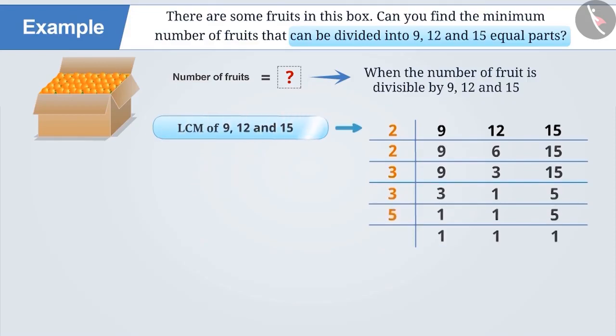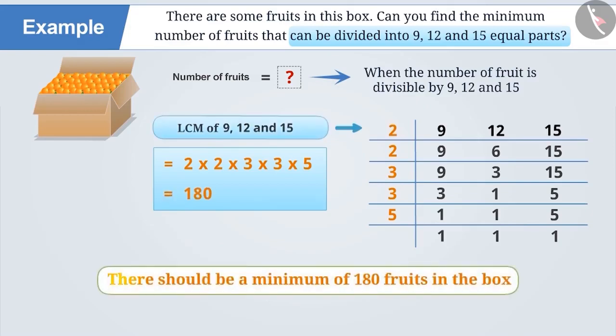In order to find the LCM of 9, 12 and 15, multiply these prime numbers to get 180. So, there should be a minimum of 180 fruits in the box.